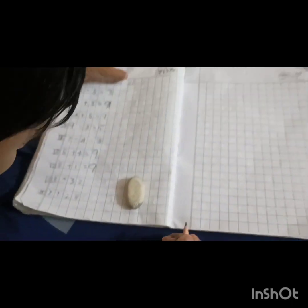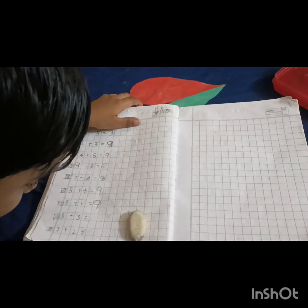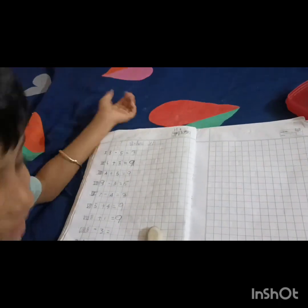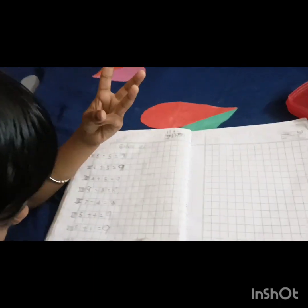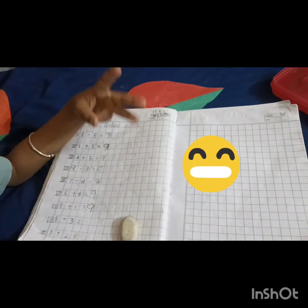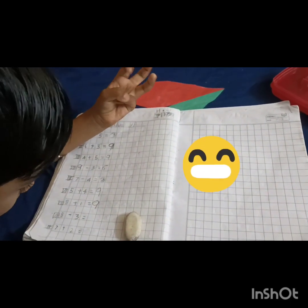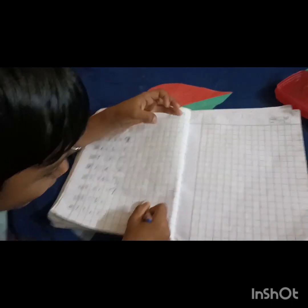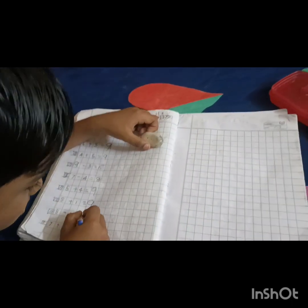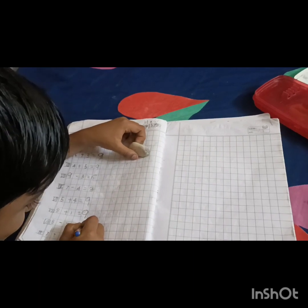8 minus 3 is the number of 8. 8 in the mind. That's the number of 8. 7, 6, 7, 6, 5. Answer is? 4.